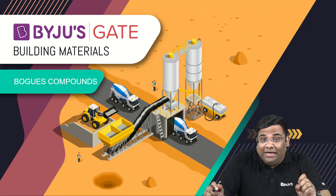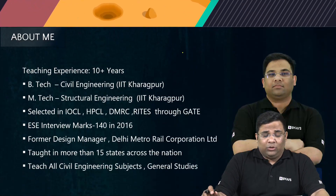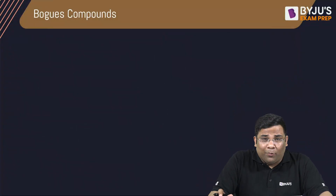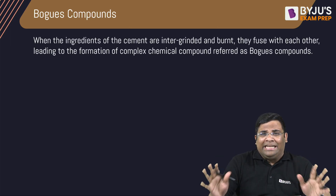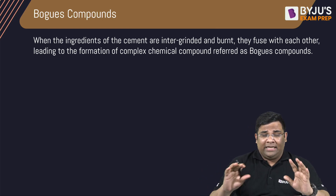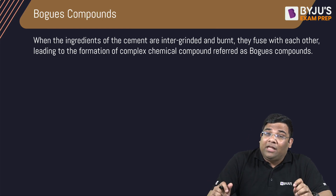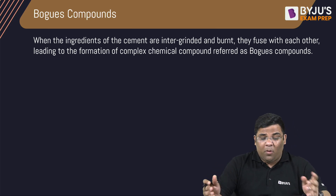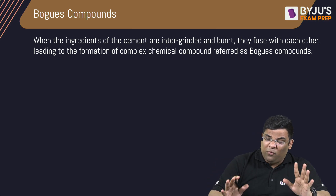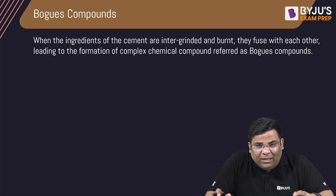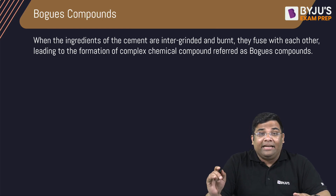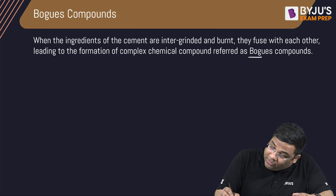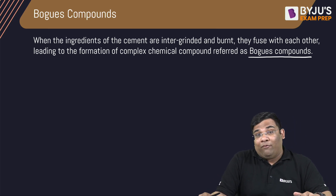In this video, we'll discuss Bogue compounds. What are Bogue compounds? When we are mixing the raw ingredients of cement and then allow them to get intergrinded and burnt, we get the Bogue compounds. So Bogue compounds are not the raw materials — they are formed after the raw materials are mixed together. When the ingredients of cement are intergrinded and burnt, they fuse with each other, leading to the formation of complex compounds known as Bogue compounds.